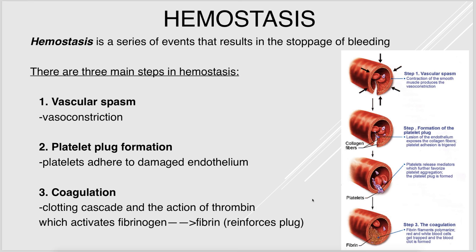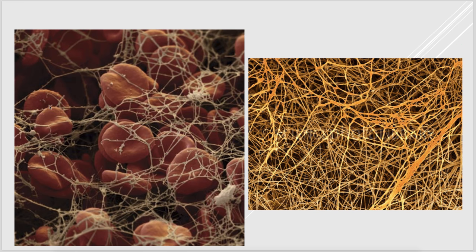Hemostasis is the process of stopping bleeding, and there are three main steps. The first is the vascular spasm, which is vasoconstriction — this limits the amount of blood getting to the area. The second step is the formation of the platelet plug: damaged endothelial layer causes release of collagen into the lumen, which causes platelets to attach forming the platelet plug. The final step is coagulation, which causes activation of thrombin. Thrombin is an enzyme that activates fibrinogen, which forms fibrin — a mesh that reinforces the platelet plug.